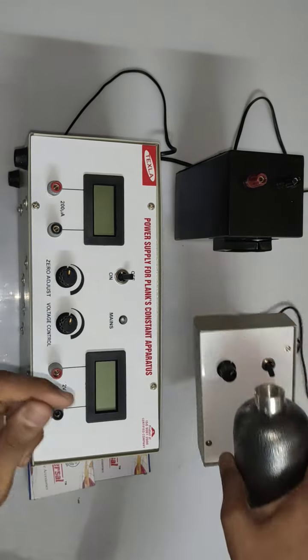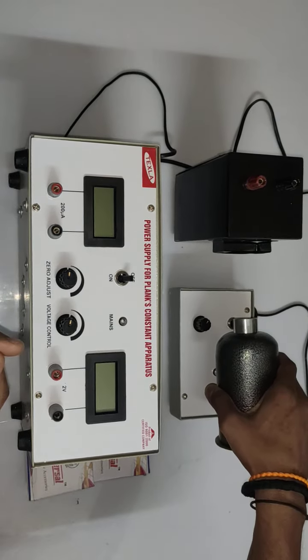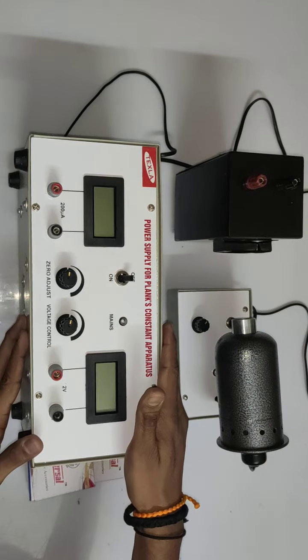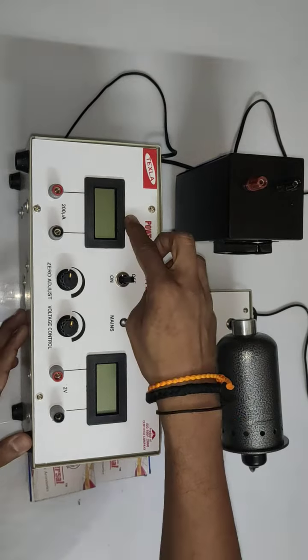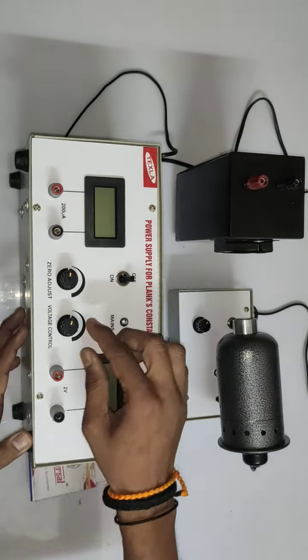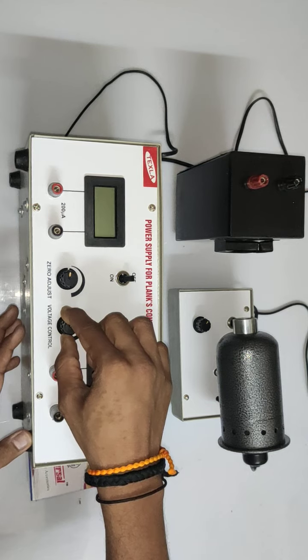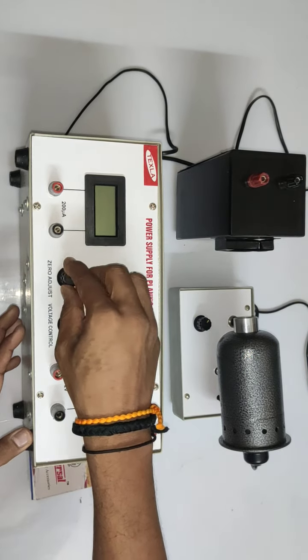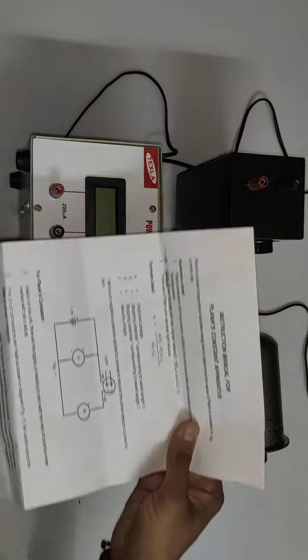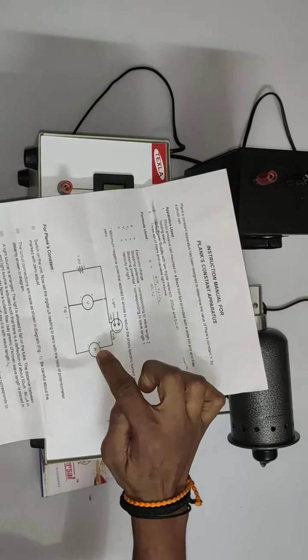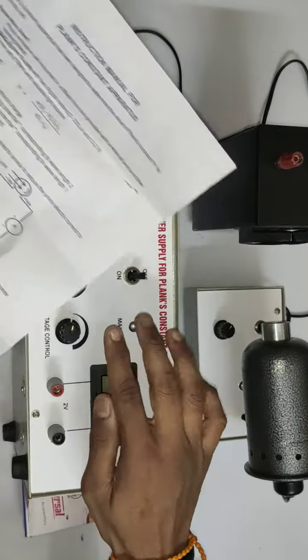This is the power supply: a 2-volt voltmeter, 200 microamp ammeter. This is the voltage variation part where you can vary the voltage. An inbuilt power supply is present with zero adjustment for current reading. Right now we are making the connections, so voltmeter, ammeter, and this power supply are all inbuilt.